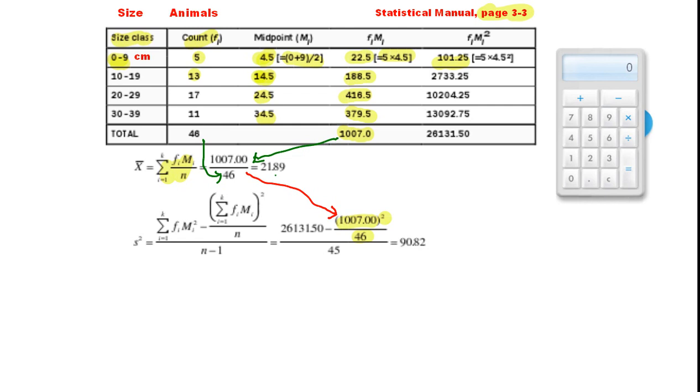The next thing we need to do is work out the last column in our table over here. This is just the frequency, the count, times the midpoint squared. If we look at the bottom row, we've got 11 times 34.5 squared. So over here to the calculator, 11 times 34.5 times 34.5 equals 13,092.75.